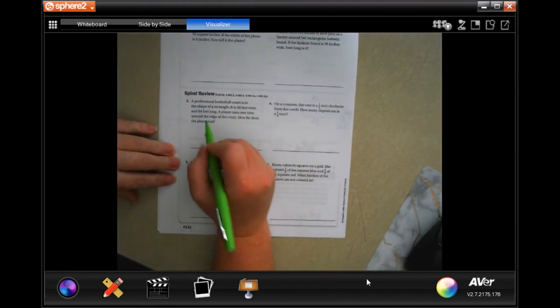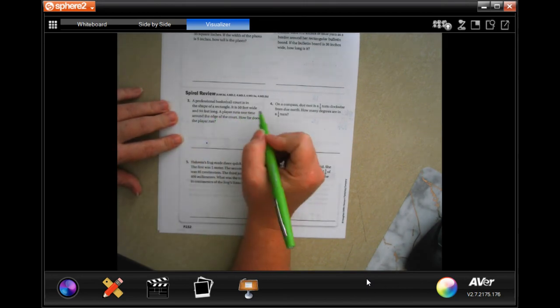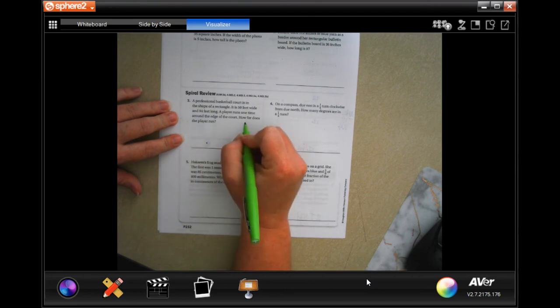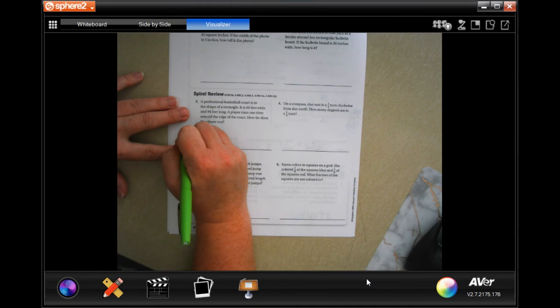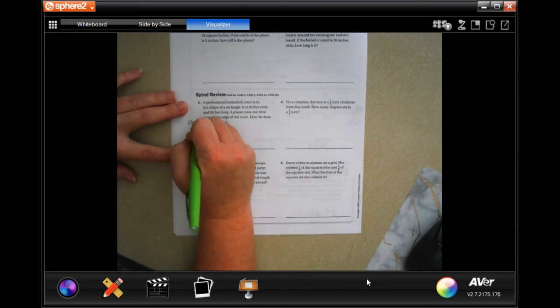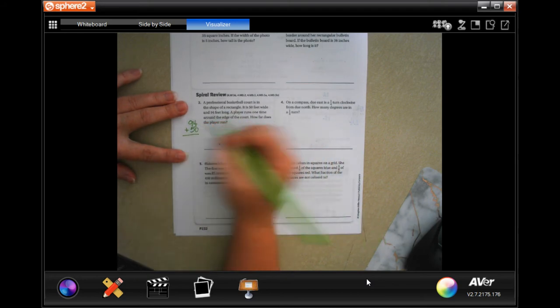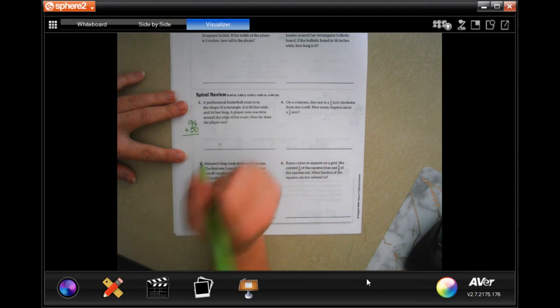So a professional basketball court is in the shape of a rectangle. It's 50 feet wide and 94 feet long. Player runs one time around the edge of the court. How far does a player run? Well, so we have 50 and we have 94. So we could add those up and then multiply it by two. Base, length, or length and width, or however you want to do it, length and width.